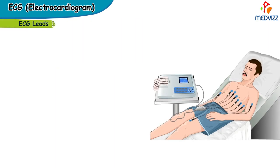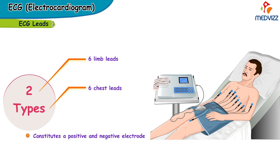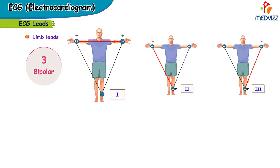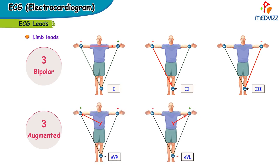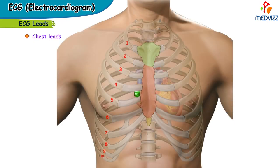Now let's talk about ECG leads. Fundamentally, there are two types of leads: six limb leads and six chest leads. A lead constitutes a positive and a negative electrode. Limb leads consist of three bipolar limb leads — Lead I, Lead II, and Lead III — and three augmented limb leads: aVR, aVL, and aVF. The chest leads are designated as V1, V2, V3, V4, V5, and V6.